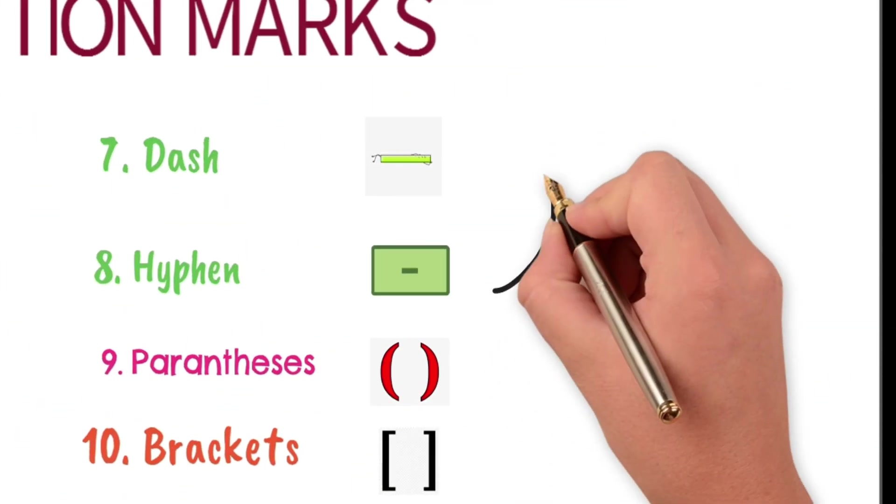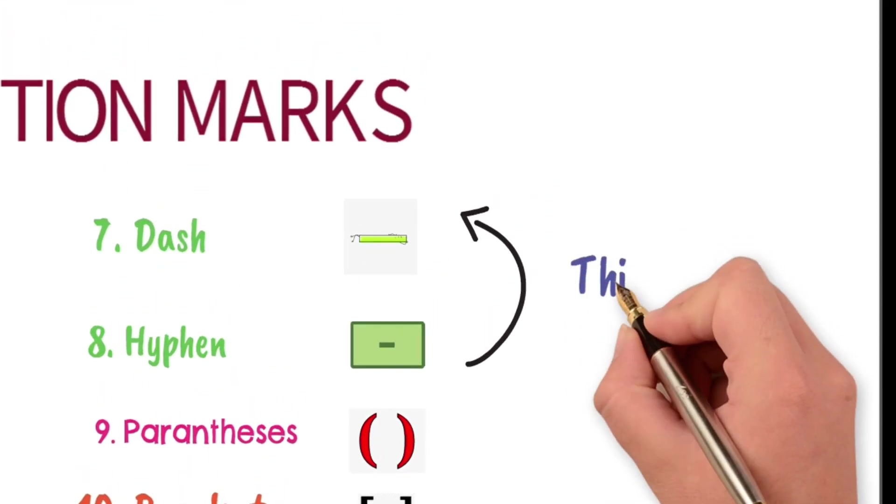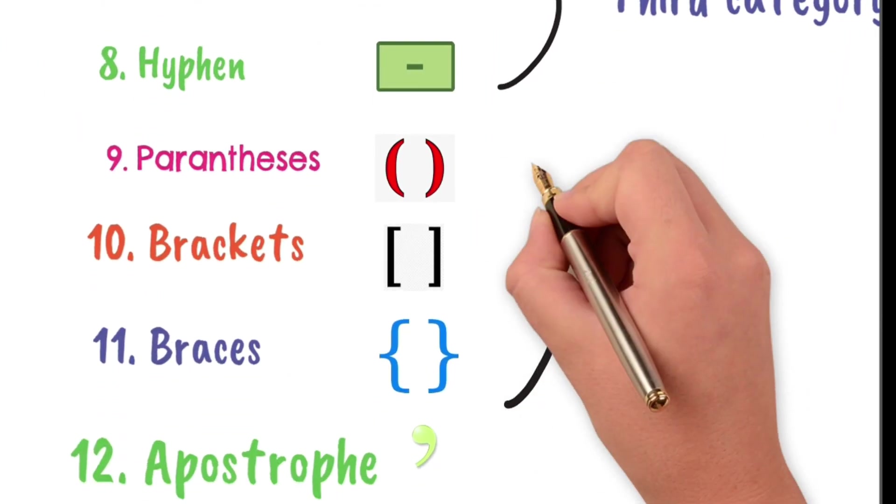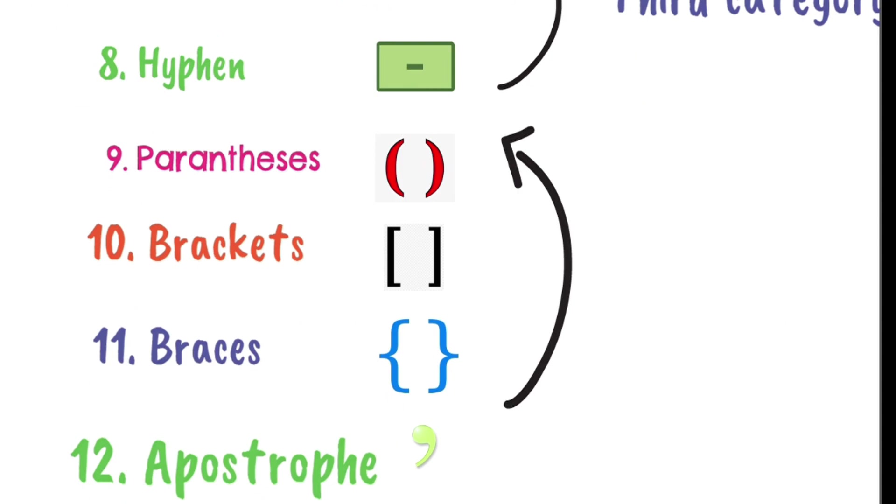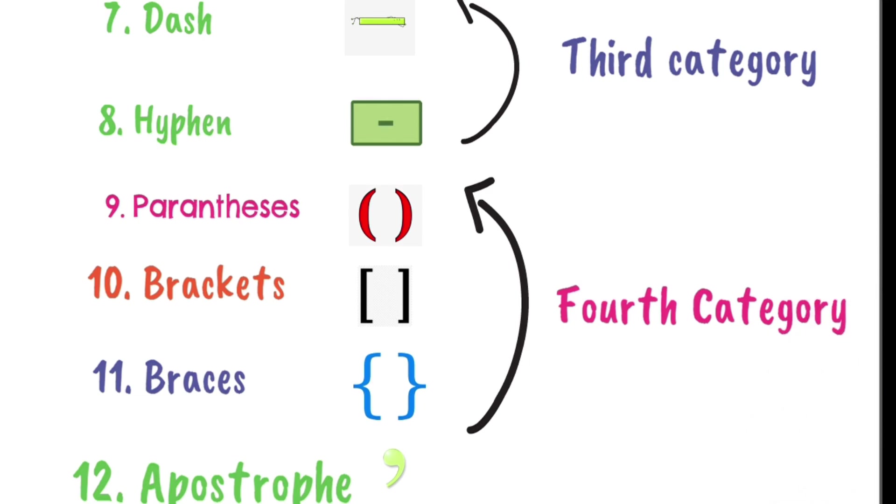In the third category, we have dash and hyphen on the basis of their similar appearance. But use them carefully as they are different in their size of length and uses. And in the fourth category, we have parentheses, brackets and braces. These punctuation marks are used to provide additional information.